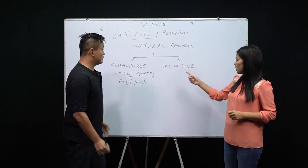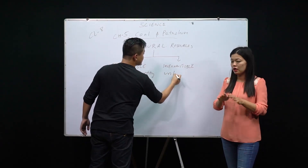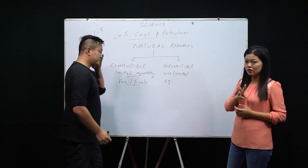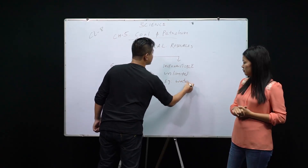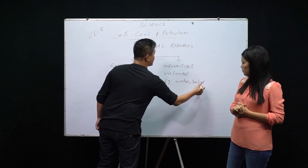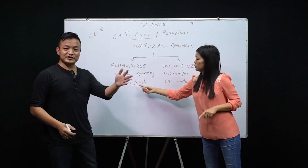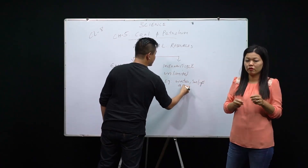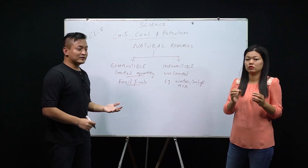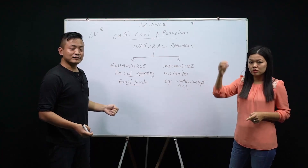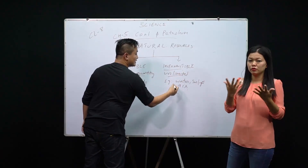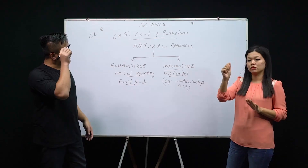Inexhaustible natural resources are those which are available in unlimited quantity — for example, water, sunlight, and air. Air is not expensive. From this we can also conclude that fossil fuels like coal, which are exhaustible, are expensive because they are available in limited quantity. Remember the examples for all of this.